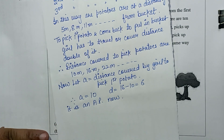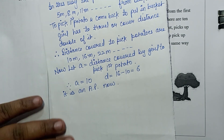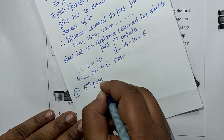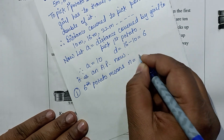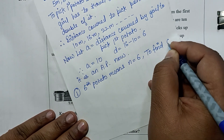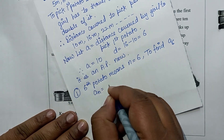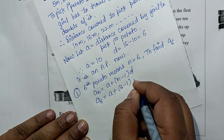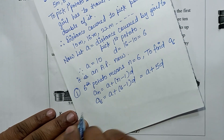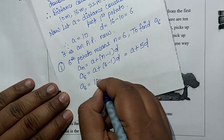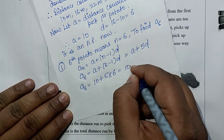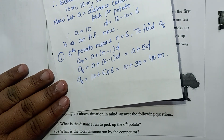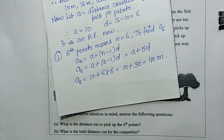So now we solve this. a = 10, d = 6. The first part asks for the distance to run to pick the 6th potato. n = 6, find a6. Using aₙ = a + (n−1)d: a6 = a + 5d = 10 + 5×6 = 10 + 30 = 40 meters. So the distance run to pick the 6th potato is 40 meters.